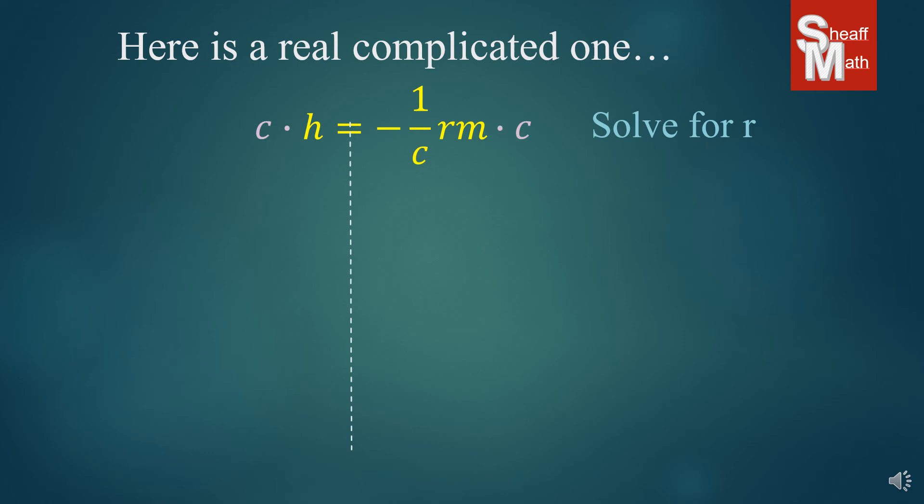By doing that we can cancel out those C's. Now this is what we're left with: HC or CH, it doesn't matter which way you put it, equals negative 1RM. And now I'm just going to get rid of the negative 1 and the M to get that R by itself. So I'll divide by M first, leaving me with HC over M equals negative 1R.